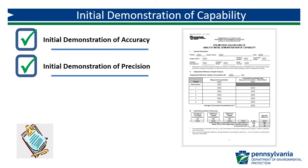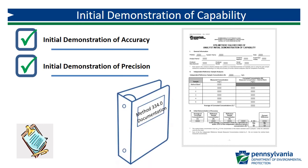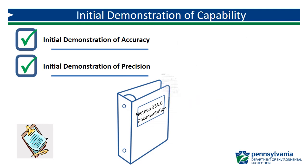If the analyst passes both the initial demonstrations of accuracy and precision, he or she has successfully completed the initial demonstration of capability and can use the specific grab sample method to collect data for regulatory purposes or comparative grab sampling. Be sure to maintain a copy of your IDC form — the only way to document that it was completed is to be able to produce a copy of this completed form. You may want to create a binder to contain all of your important Method 334.0 documents.